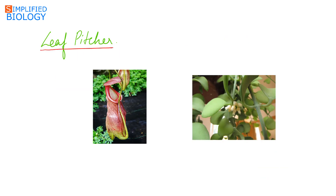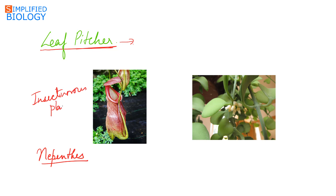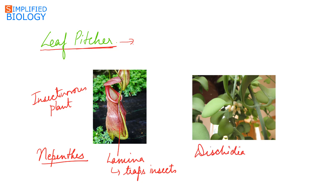Next, leaf pitcher. The complete leaf or a part of the leaf gets modified into a pitcher-like structure. In case of Nepenthes, that is pitcher plant, it is an insectivorous plant in which the lamina gets modified into a pitcher-like structure that traps insects. In case of Dischidia, which is an epiphyte — a plant growing on branches of trees — the leaf gets modified into a pitcher to store water.